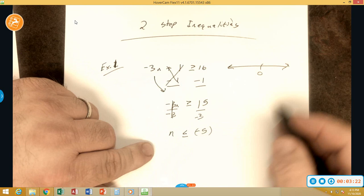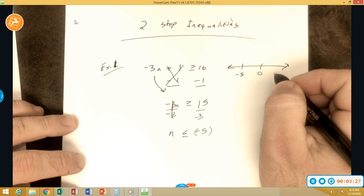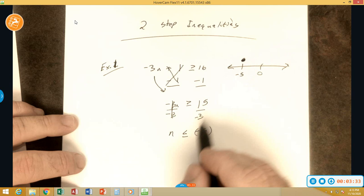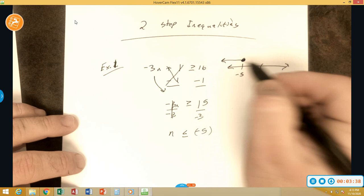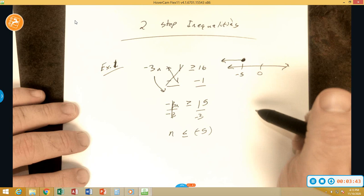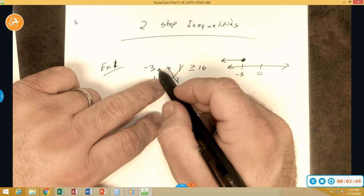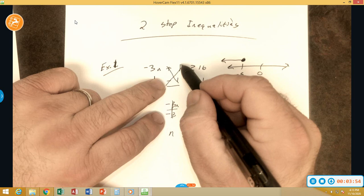Now that we have this, we can graph it. So here we go. Negative 5 is to the left of 0. This will be a closed dot since it's equal to, and since the variable is on the left, the inequality is pointing there. We go. So we can test things like negative 6 would be something we could test. So negative 3 times negative 6 would give me a positive 18. 18 plus 1 is 19, and 19 is indeed greater than or equal to 16, so it worked.